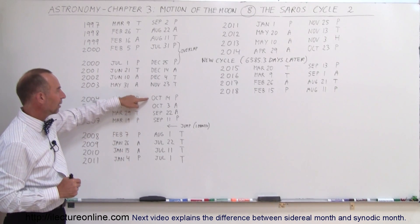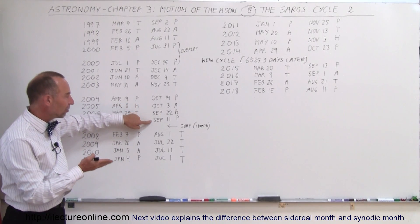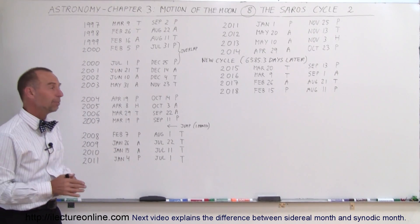And here you see again, October 14th, October 3rd, September 22nd, September 11th, and then instead of jumping to about September the 1st, it jumps to August the 1st. It skips a complete month.